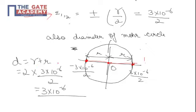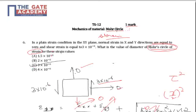So d is r plus r or 2r where r is given by the value of a principal strain which is 3 by 2 into 10 to the power minus 6. So diameter comes out as 3 into 10 to the power minus 6, making C as the correct choice for question number 6. Thank you.